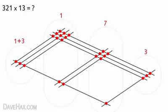1, 2, 3, plus 1, gives us 4. So we have 4, 1, 7, 3.